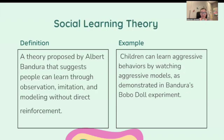Social learning theory. This is a theory proposed by Albert Bandura that suggests that people can learn through observation, imitation, and modeling without direct reinforcement. So children can learn aggressive behaviors by watching aggressive models such as was demonstrated in Bandura's Bobo doll experiment.